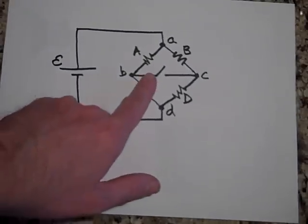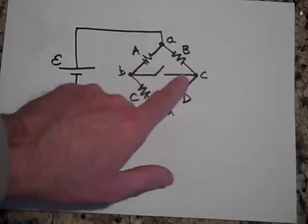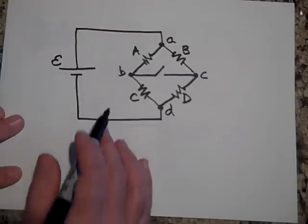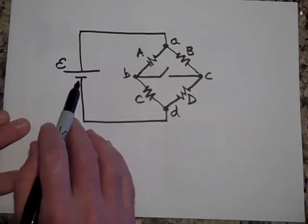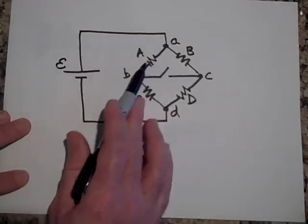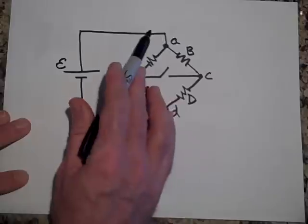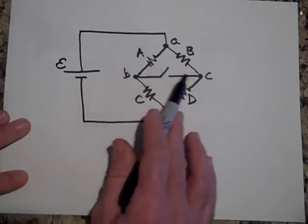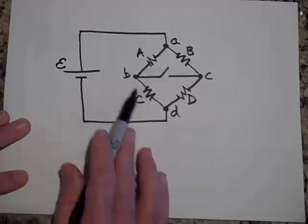It's called a bridge circuit because it's almost like there's a bridge across here between B and C. This is one way that bridge circuits can be drawn. A battery and then current can flow this way or it can flow this way or if this switch is closed it can flow this way too or maybe this way.